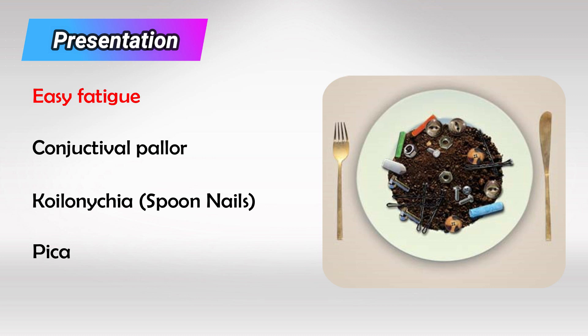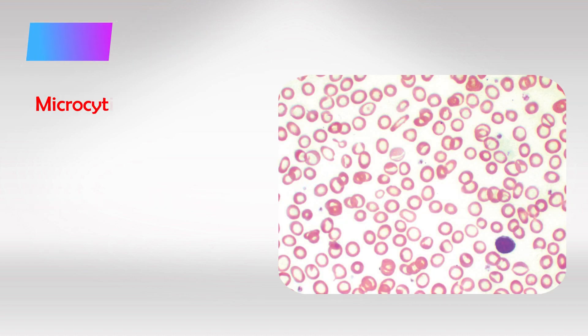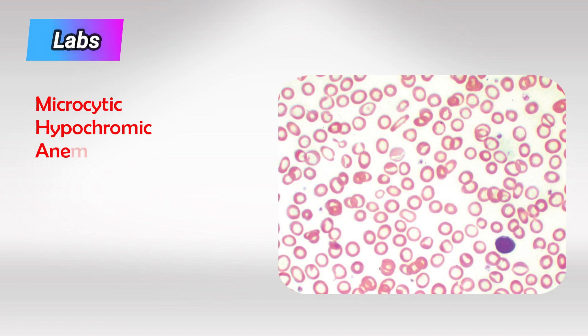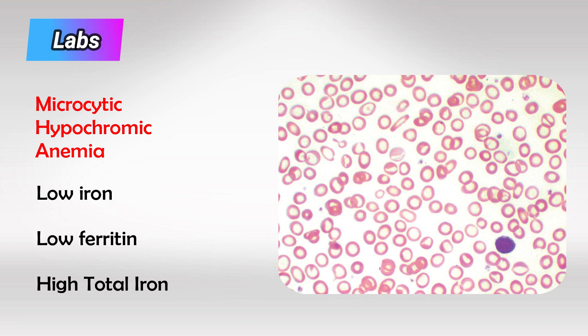The most commonly seen form of pica in these patients is craving for ice. The erythrocytes — the RBCs themselves — will be fewer in number, smaller in size, and paler. We call this microcytic hypochromic anemia.